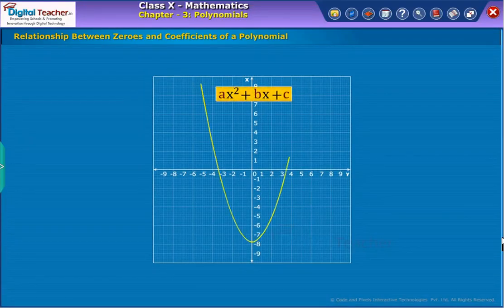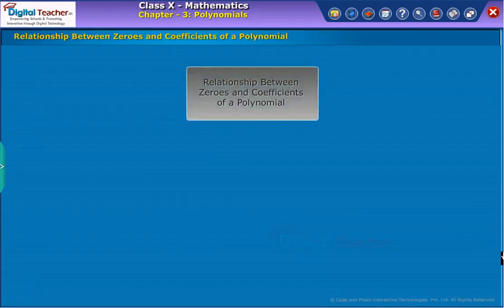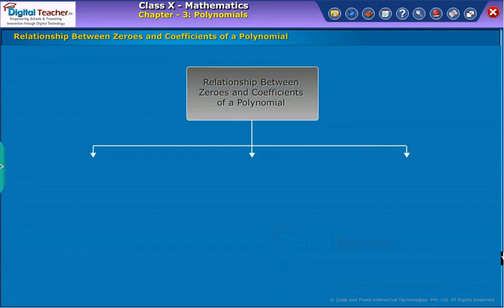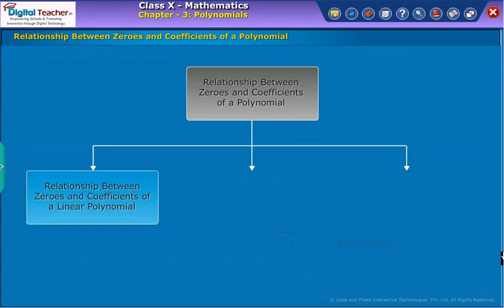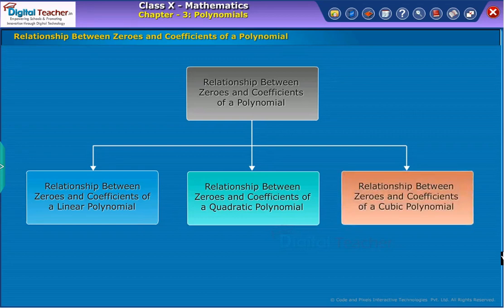Let us see how the zeros of a polynomial are related to its coefficients. The relationship between zeros and coefficients of a polynomial can be studied under three categories: the relationship between zeros and coefficients of a linear polynomial, of a quadratic polynomial, and of a cubic polynomial. Let us learn about each case in detail.